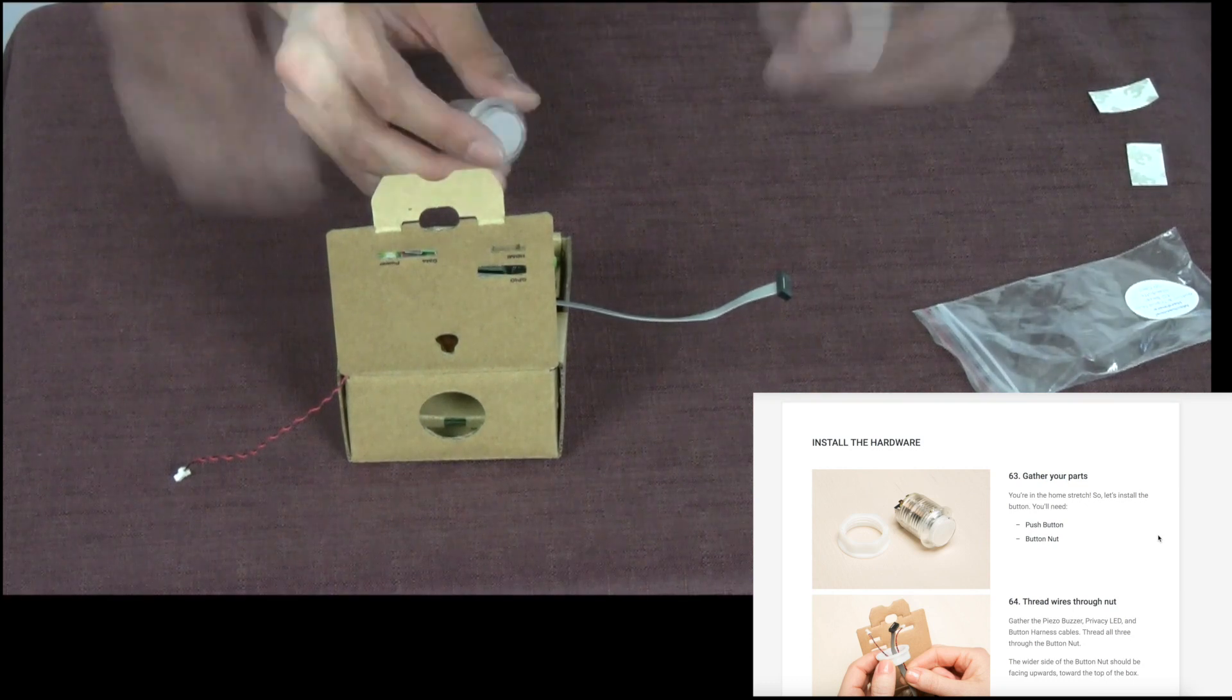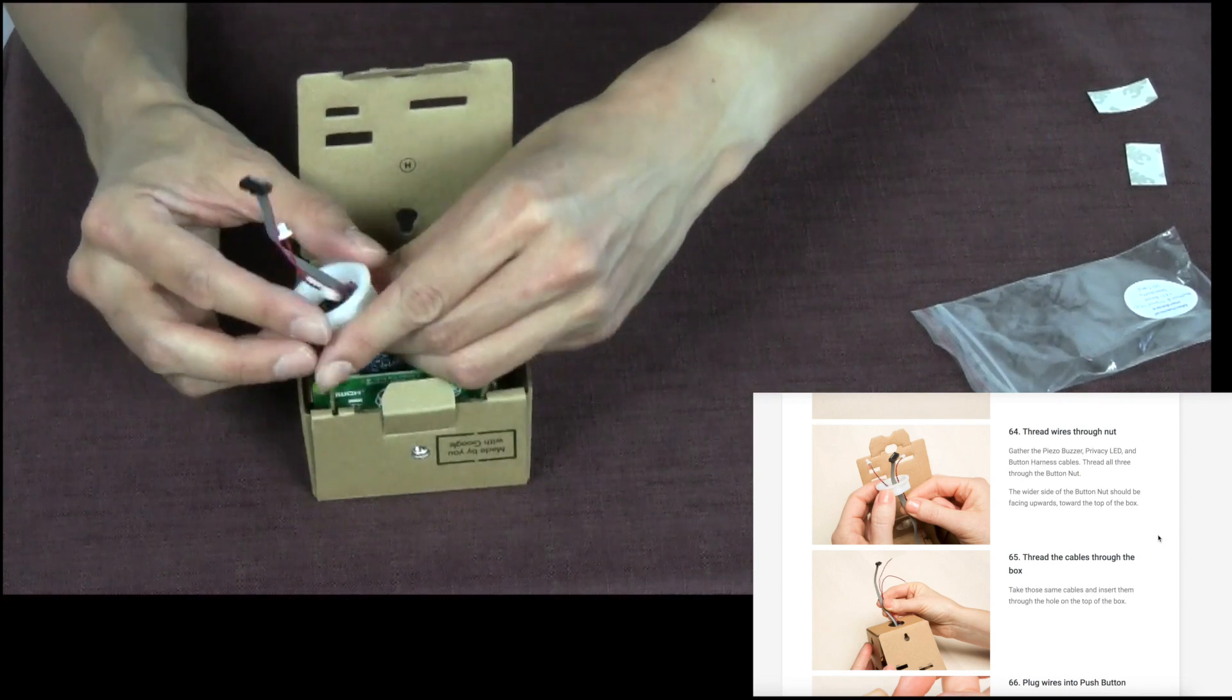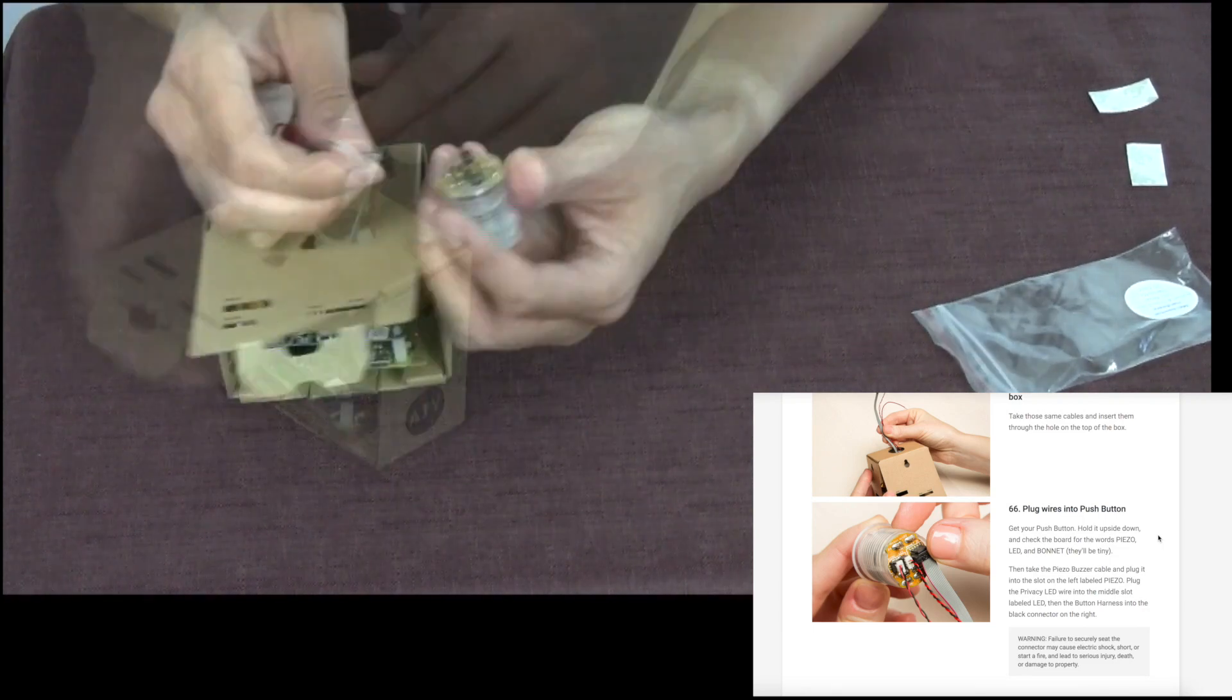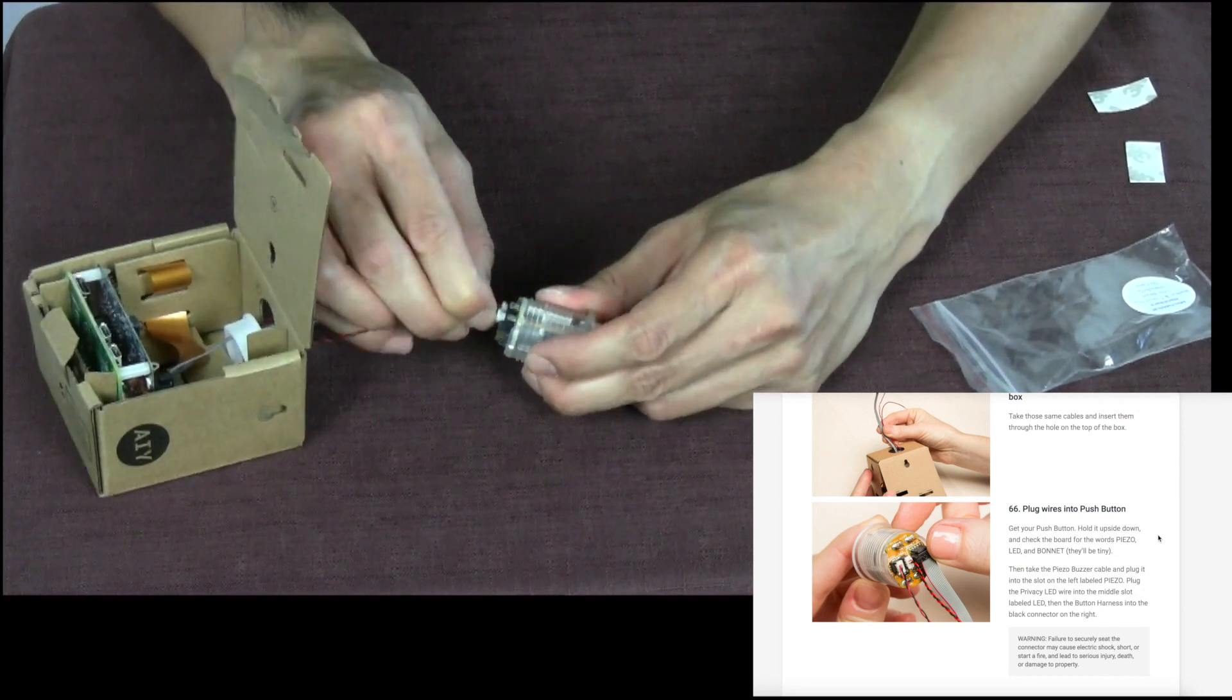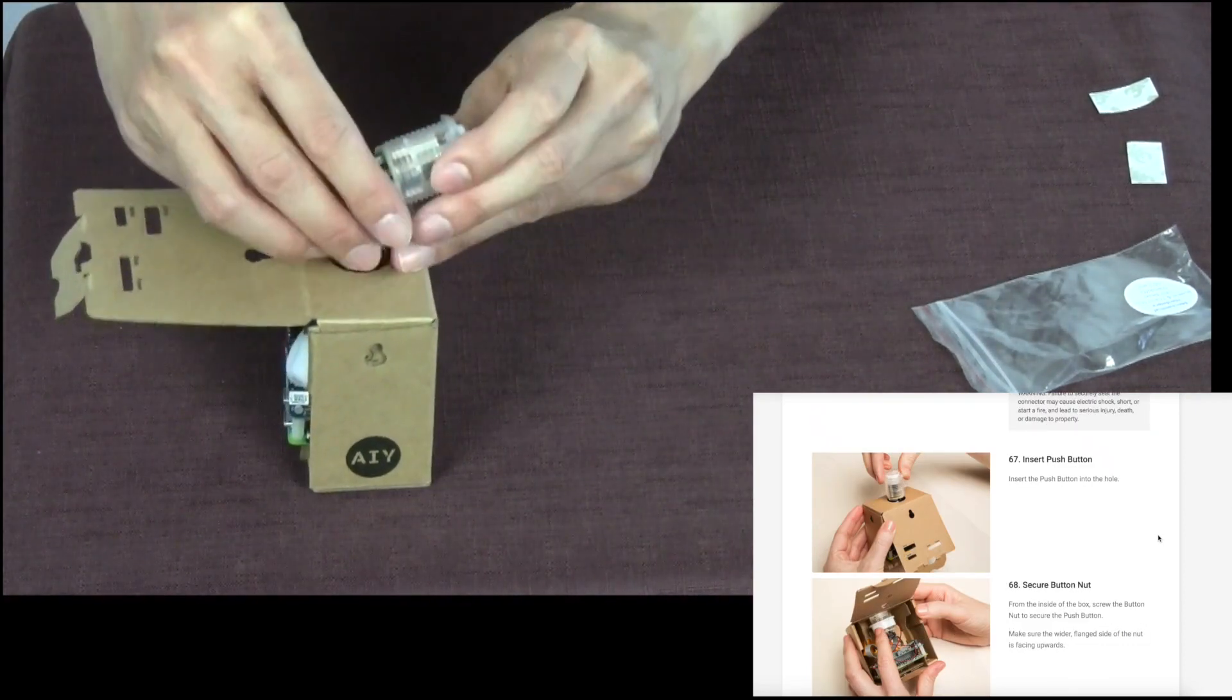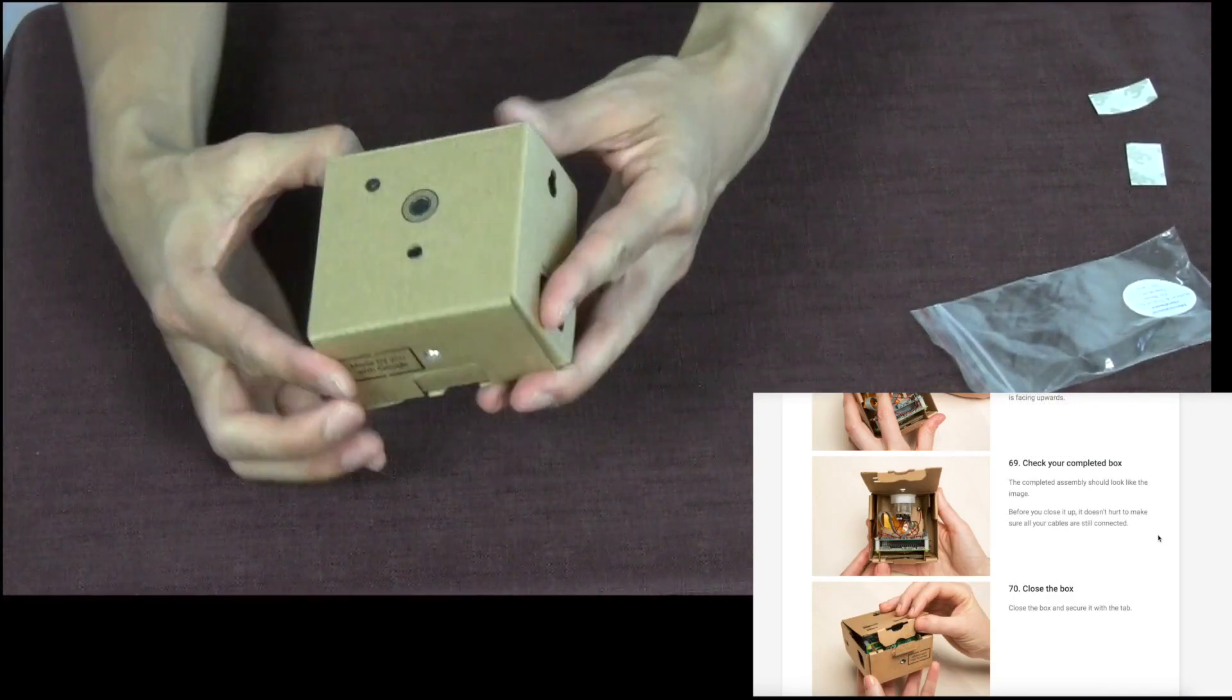Now we're going to install the button here. You thread the wires through the nut first. The wider section of the nut should be facing up. Thread all the wires through right here. And then we're going to take the cables and thread them through, take all the cables, thread them up. Now we're going to plug everything in. That just popped right in. Next, we're going to do the privacy buzzer. And then last but not least, we are going to plug in. This is the bonnet connector right here. And that pops right in. And then we'll insert the push button back into the box. Screw on the nuts here and check my completed box. And then we're ready to close up the box. And here is my vision kit.